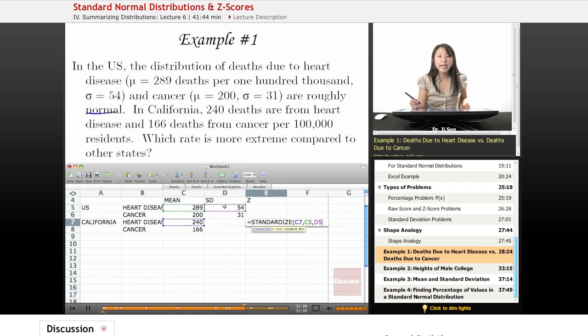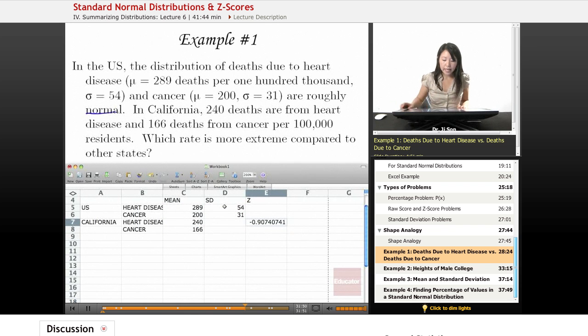Obviously, I could also do my x subtract the mean, put that in parentheses, divide by standard deviation. So here we see that the z-score for heart disease is about one standard deviation away, negative 0.9.